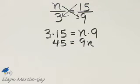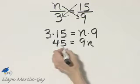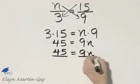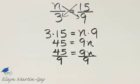Let's solve this equation now for n. To do so, we'll divide the left side and the right side by the coefficient of n, which is 9.